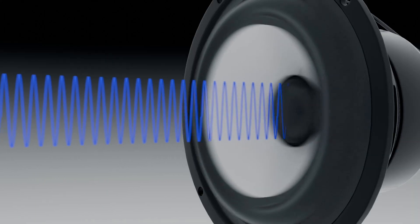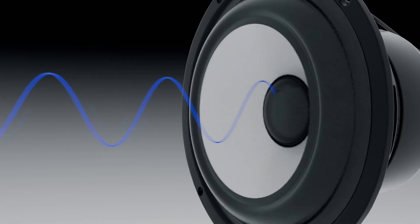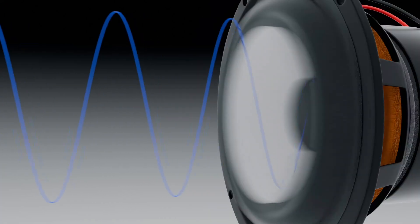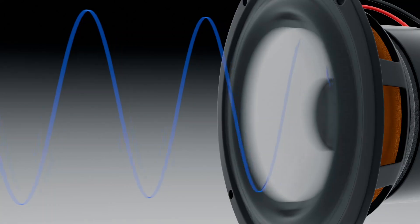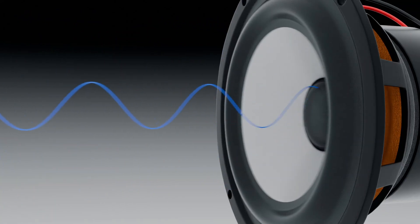The cone moves faster to increase the pitch of the sound and slower to decrease it. Similarly, for a loud sound, the amplitude of the cone is larger compared to a low sound.